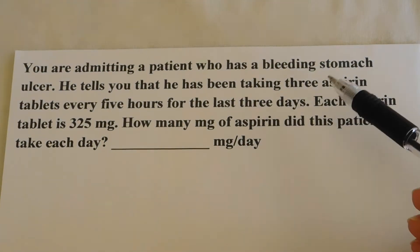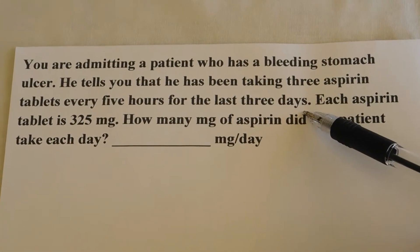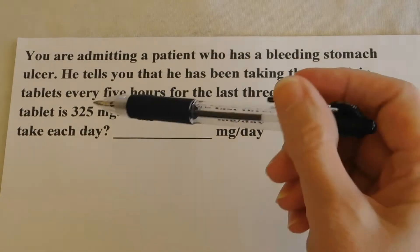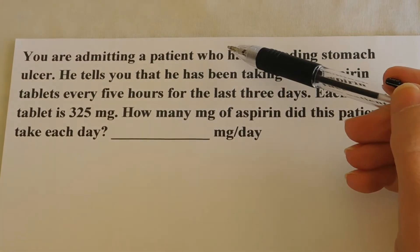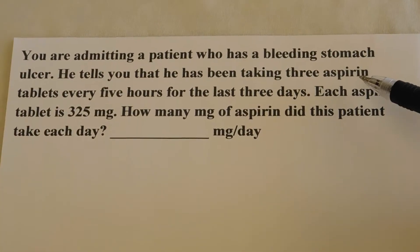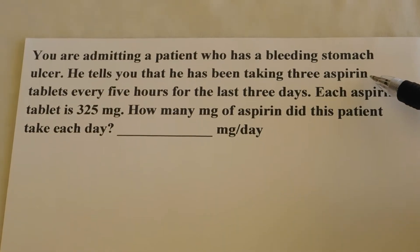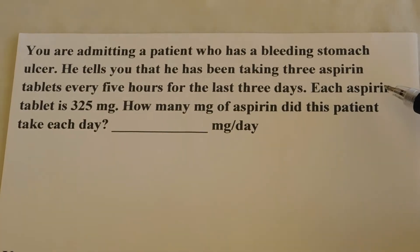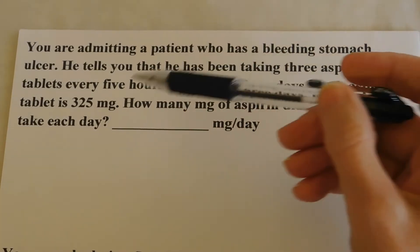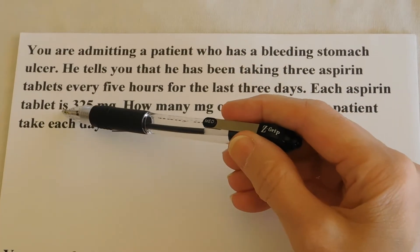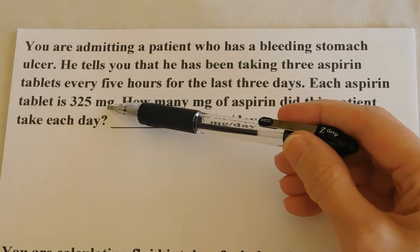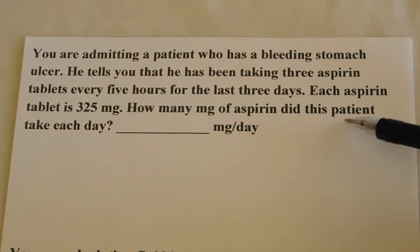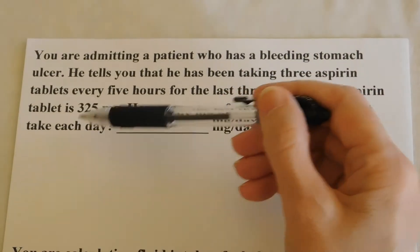Today we're going to do a few practice dimensional analysis problems. There are two of them here, and the first one we're going to talk about is this one. You're admitting a patient who has a bleeding stomach ulcer. He tells you that he's been taking three aspirin tablets every five hours for the last three days. Each aspirin tablet, when you look on the bottle that he gives you, has 325 milligrams. How many milligrams of aspirin did this patient take each day?